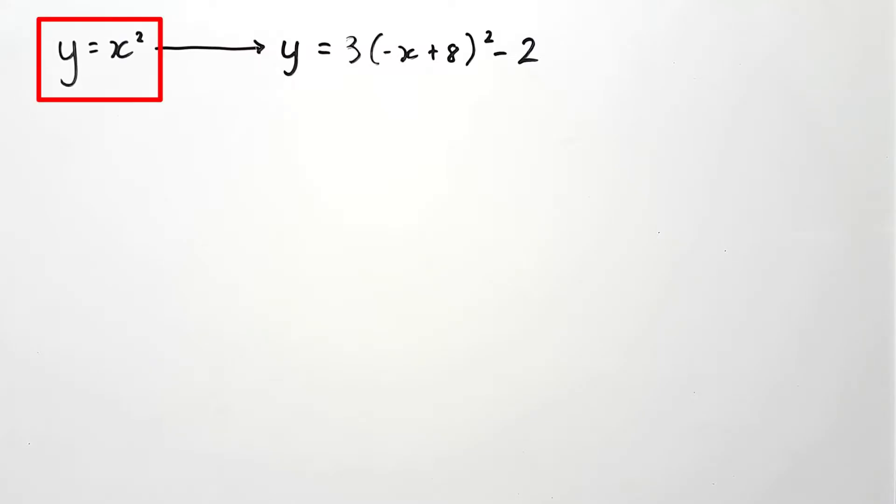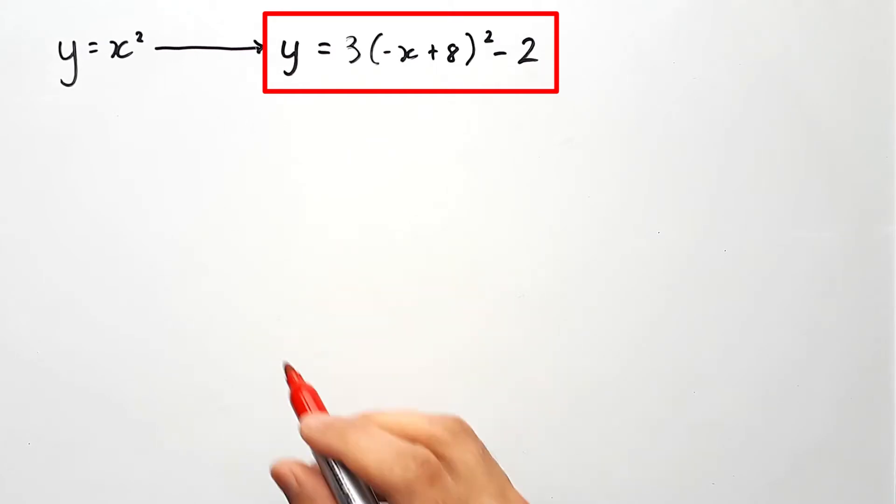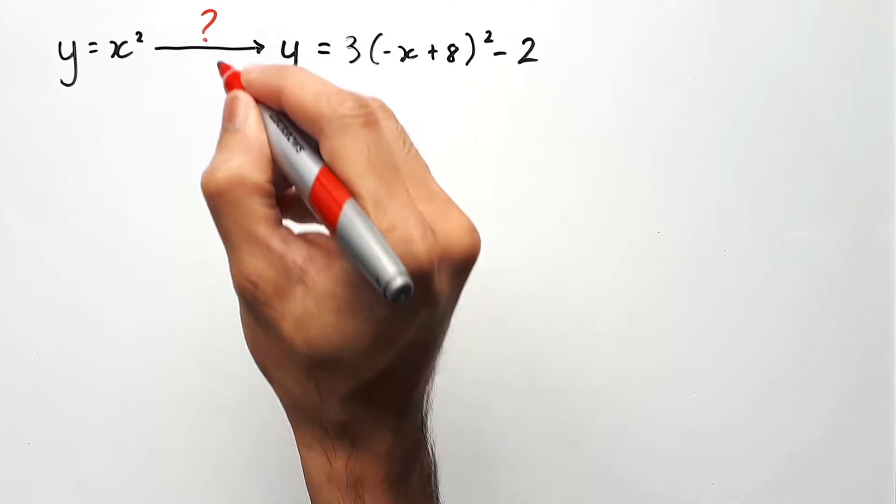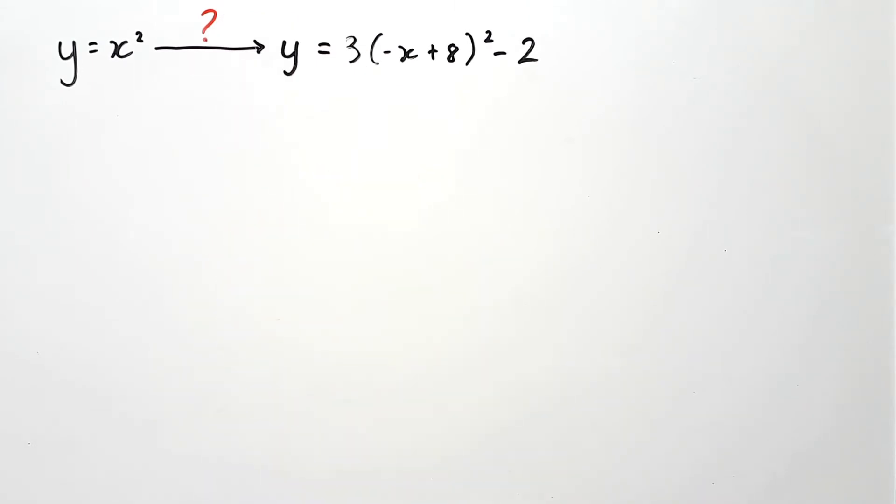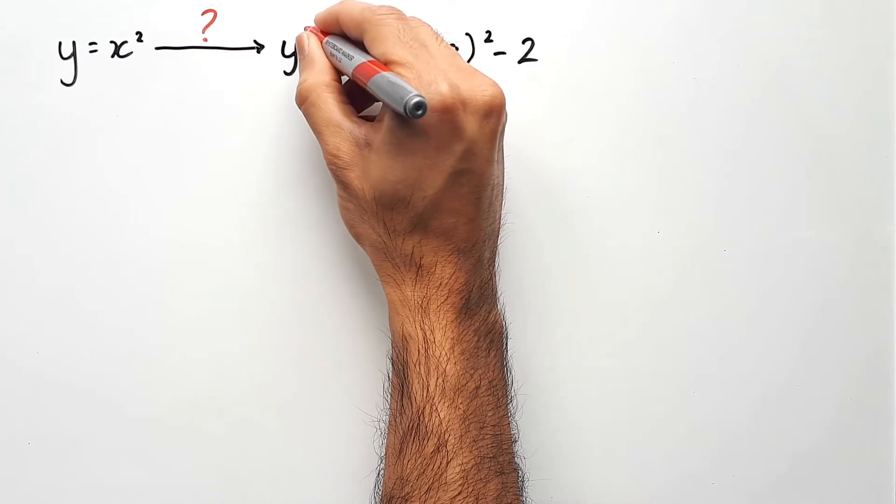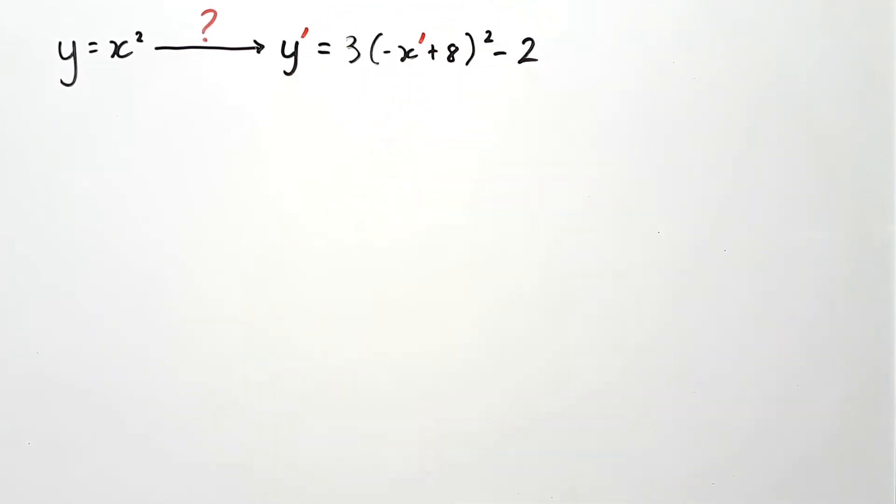When transforming from y equals x squared to y equals 3 times negative x plus 8 to the power of 2 minus 2, we are asking the question, what happened along the way? What are the sequences of transformations? To answer this, the first thing we need to do is identify the image equation correctly. That means putting apostrophes on the x and y variables for the image equation. This is very important so that we can distinguish between the image variables and the pre-image variables later on when we want to compare them.